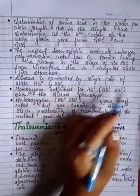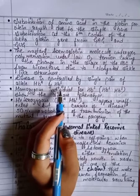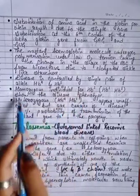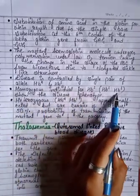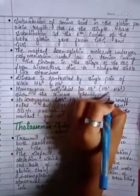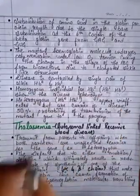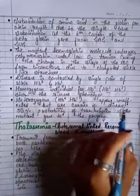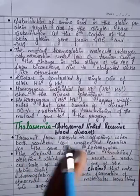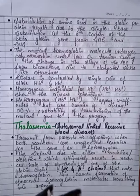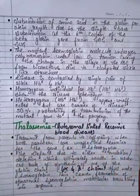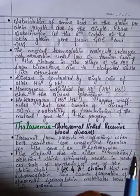This disease is controlled by a single pair of alleles: HbA and HbS. Homozygous individuals for HbS — that is, genotype HbS/HbS — show the disease phenotype.